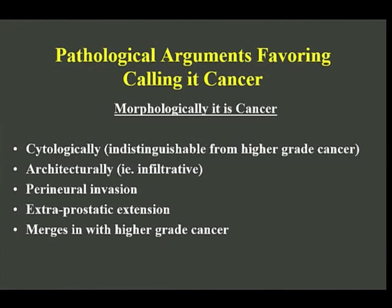From the morphology standpoint, Gleason 6 is cancer. Cytologically, it's indistinguishable at high power from Gleason pattern 4 versus pattern 3. Architecturally, it's infiltrative like cancers. There's perineural invasion. We see Gleason 6 cancers going outside of the prostate, and it merges in with higher grade cancer. One of the hallmarks of an aggressive prostate cancer is loss of P10, and 10% of Gleason 6 prostate cancers have a loss of P10.